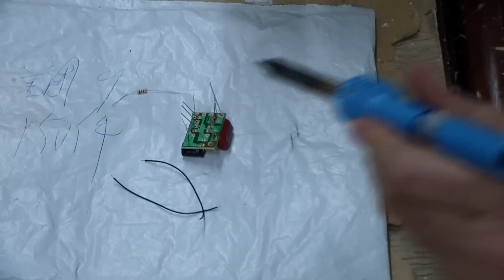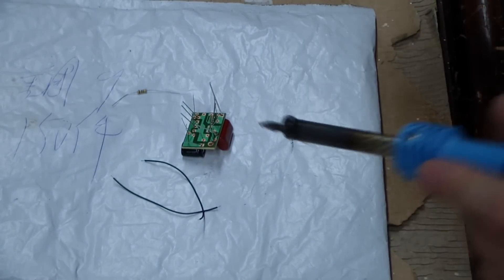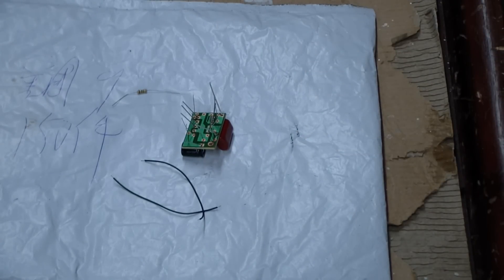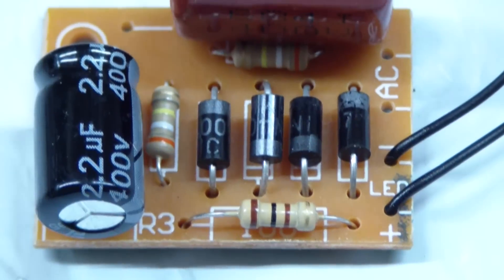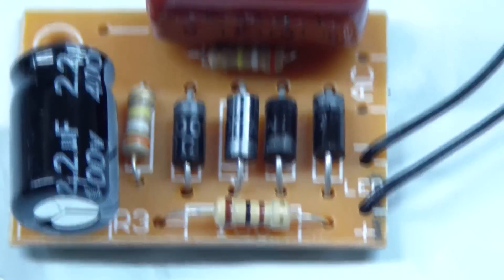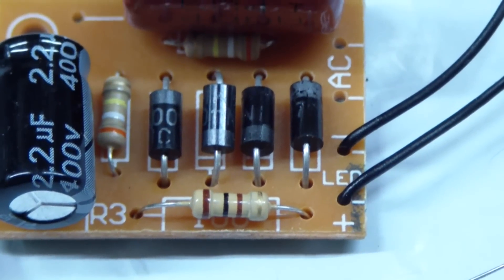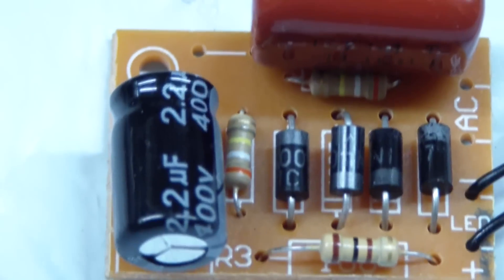You keep on doing that to all of those, and once you get them all soldered, then you clip off the excess leads. Here's the completed circuit board, and if you notice, I put the two black wires in where it says LED plus and LED minus.